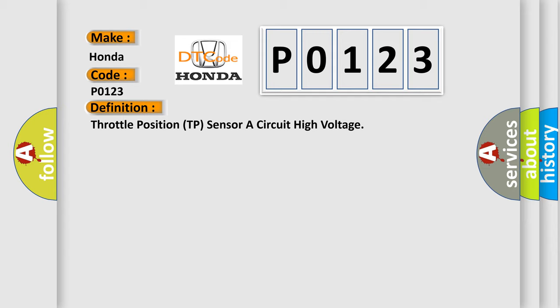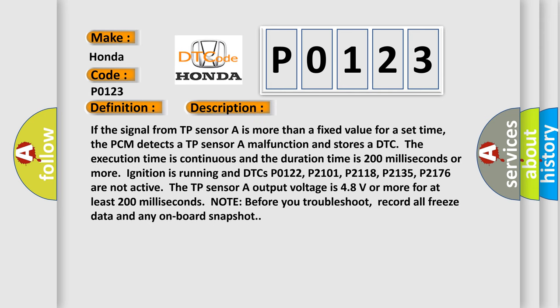And now this is a short description of this DTC code. If the signal from TP sensor A is more than a fixed value for a set time, the PCM detects a TP sensor A malfunction and stores a DTC. The execution time is continuous and the duration time is 200 milliseconds or more. Ignition is running and DTCs P0122, P2101, P2118, P2135, P2176 are not active. The TP sensor A output voltage is 4.8 volts or more for at least 200 milliseconds.